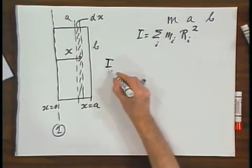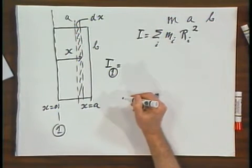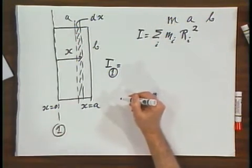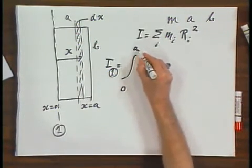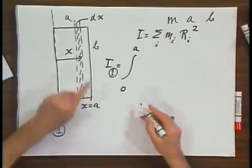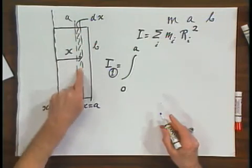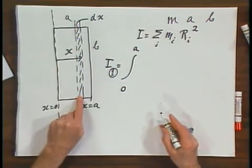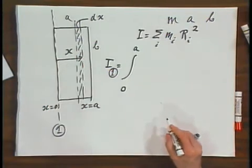So the moment of inertia about this axis of rotation is going to be an integral from x equals zero to A of this mass element times x squared, because that's the distance to this mass element.